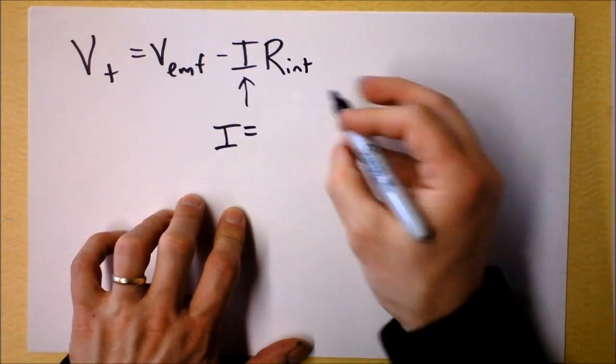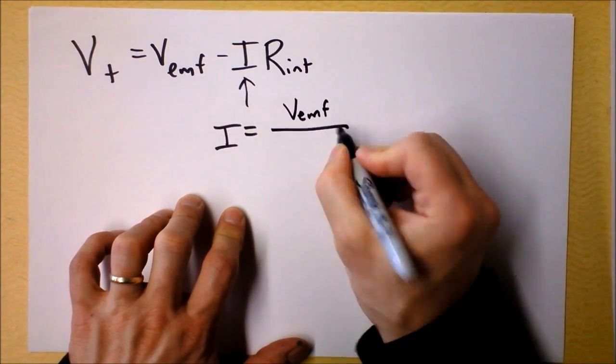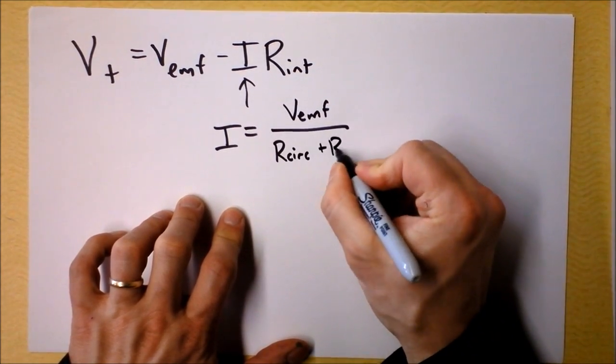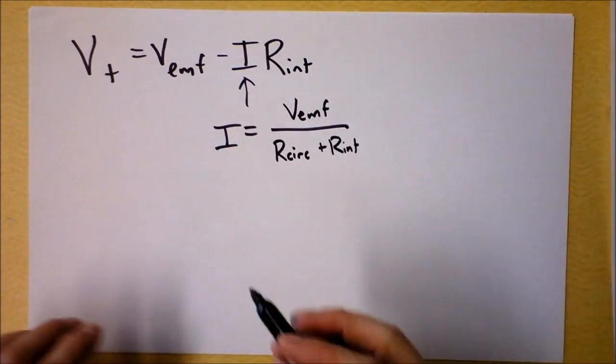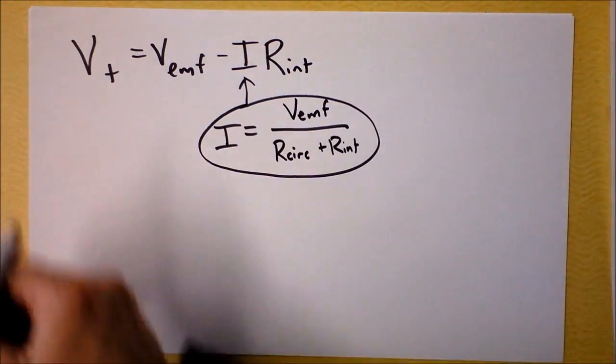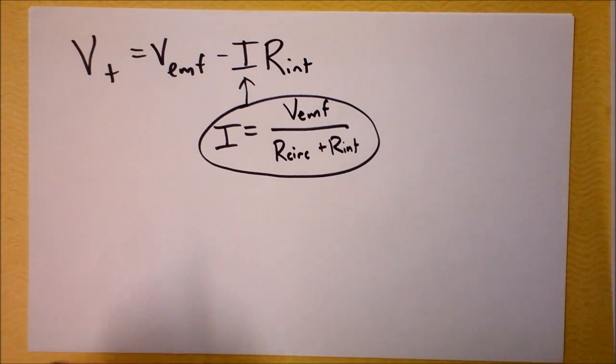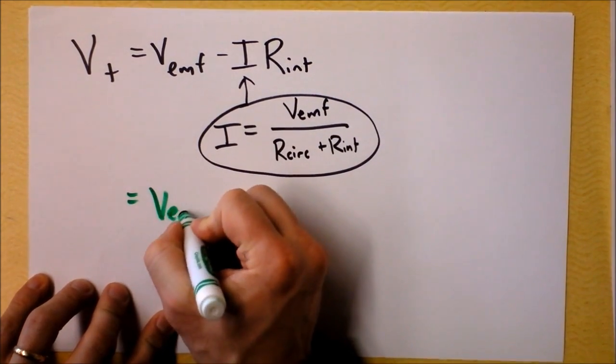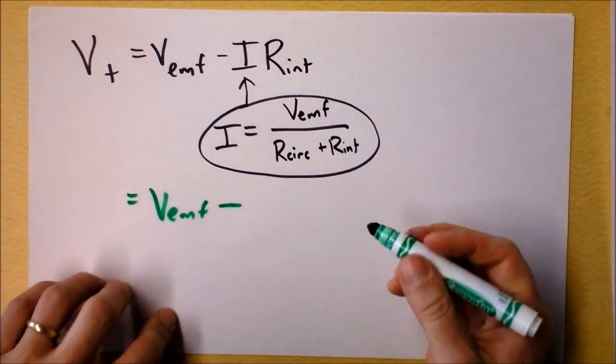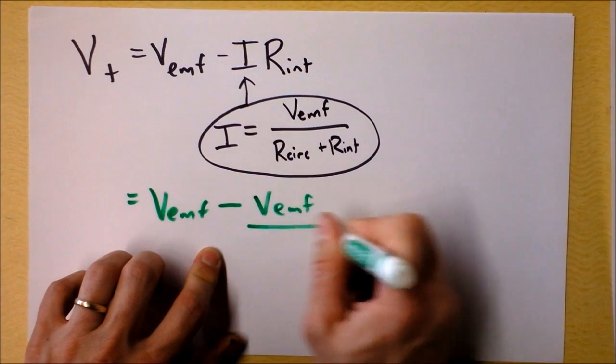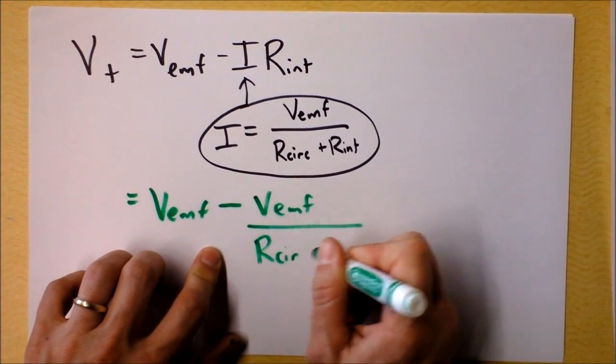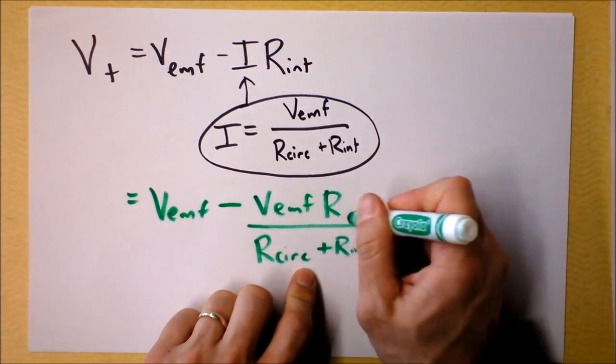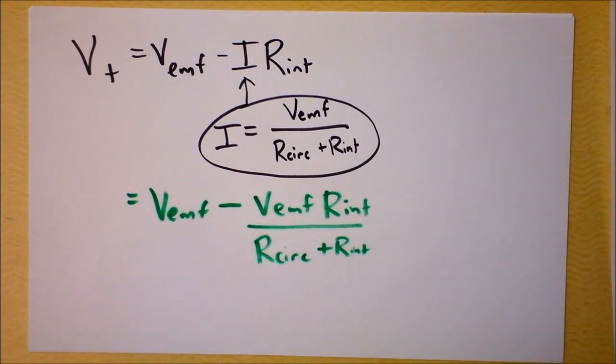So now I know that the terminal voltage is the actual pushing of the battery minus the current through the circuit times the resistance of that internal resistor, but this current depends on how much resistance is in the rest of the circuit. So let me get an equation for that current. I guess that's going to be the pushing of the battery again, but divided by the total resistance of the whole circuit. So that's the resistance of the circuit externally, plus the internal resistance of that battery that we can't get away from. And I'm going to plug that in.